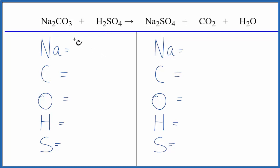Let's count the atoms up on each side of the equation. Two sodiums, one carbon, three oxygens, plus we'll count these four here, so we have seven oxygens, two hydrogens, and then one sulfur.